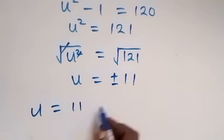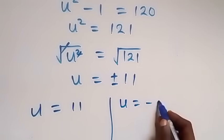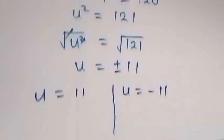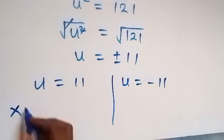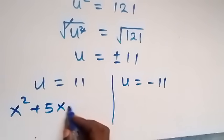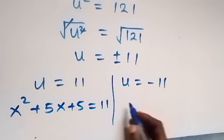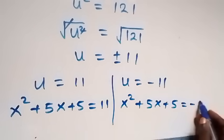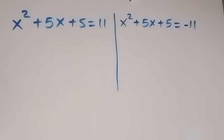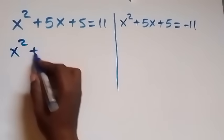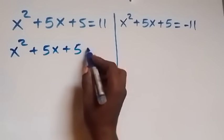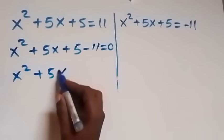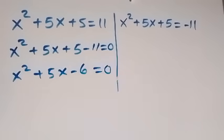So we have two solutions: u equals 11 or u equals minus 11. Recall that u equals x squared plus 5x plus 5. For u equals 11, we get x squared plus 5x plus 5 equals 11. Taking 11 to the left side, x squared plus 5x plus 5 minus 11 equals 0, which gives x squared plus 5x minus 6 equals 0.